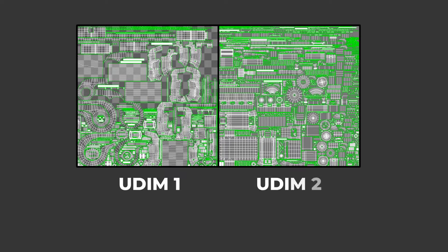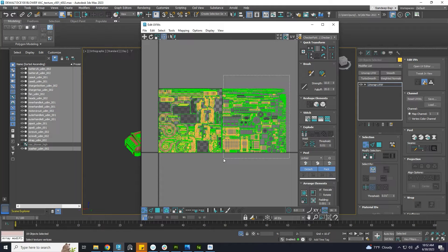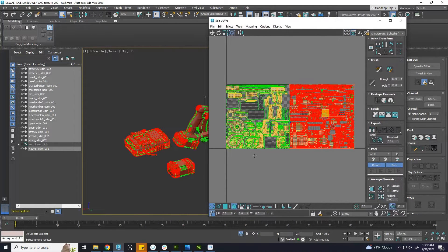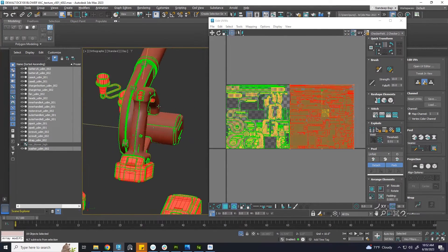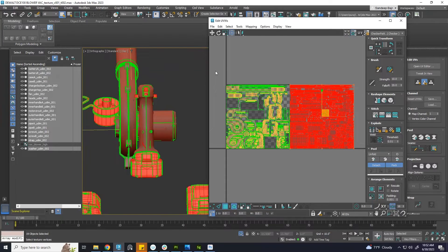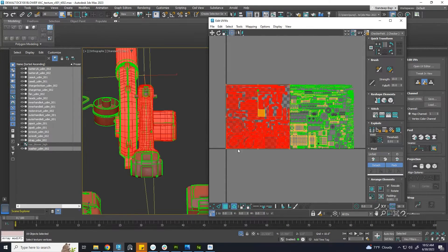When we texture in UDIM, the texture output will also be in two parts. Applying texture will be easy if you have applied two different materials for two UDIMs. If you have two UDIMs and applied only one material, you may need to select all the mesh of the UV island and apply each texture. It will be easy if you attach meshes according to the UDIM. The way I am showing here won't work if your single object's UVs are scattered all over the other UV islands.